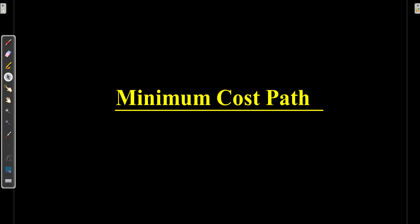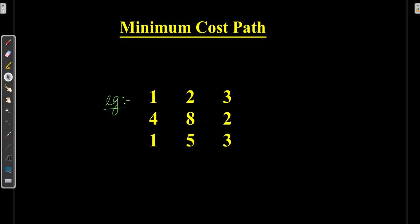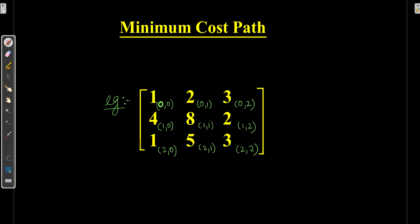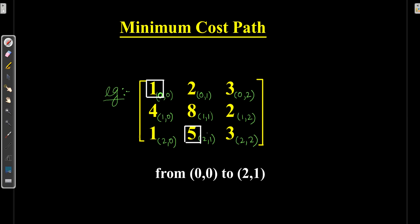Hello everyone. Today we'll be solving another DP question: minimum cost path. Let's understand this with an example. Here we have a 3×3 matrix. Let's define the index.